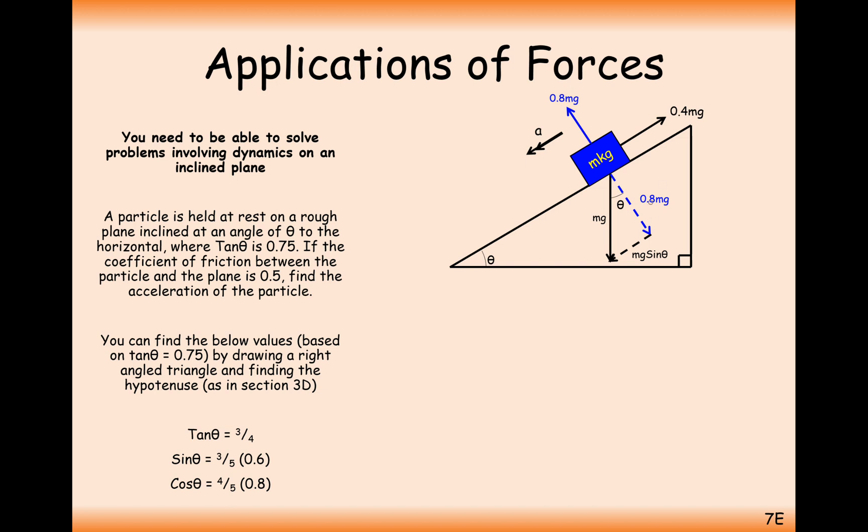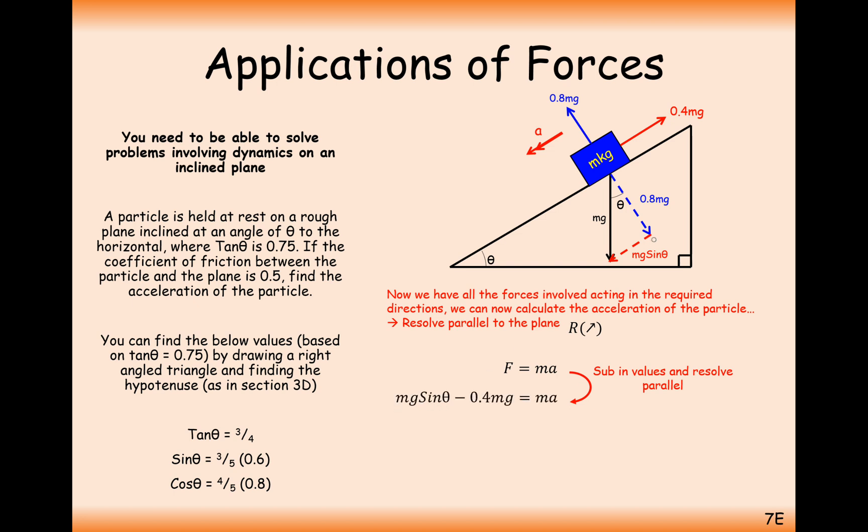Notice here how we're then adding the forces onto our diagram as we go along, and now we can consider the forces down the slope and find the acceleration. So now we have to consider the forces involved acting in the required directions. We can now calculate the acceleration of the particle. Resolving the forces down the plane, our particle is probably going to be moving down the plane. So setting downwards as positive, we're going to have mg sin theta take away 0.4 mg. So mg sin theta, that's down the plane, so that's positive direction. 0.4 mg up the plane, so that's going to have a negative symbol on the side where the forces are, equals ma.